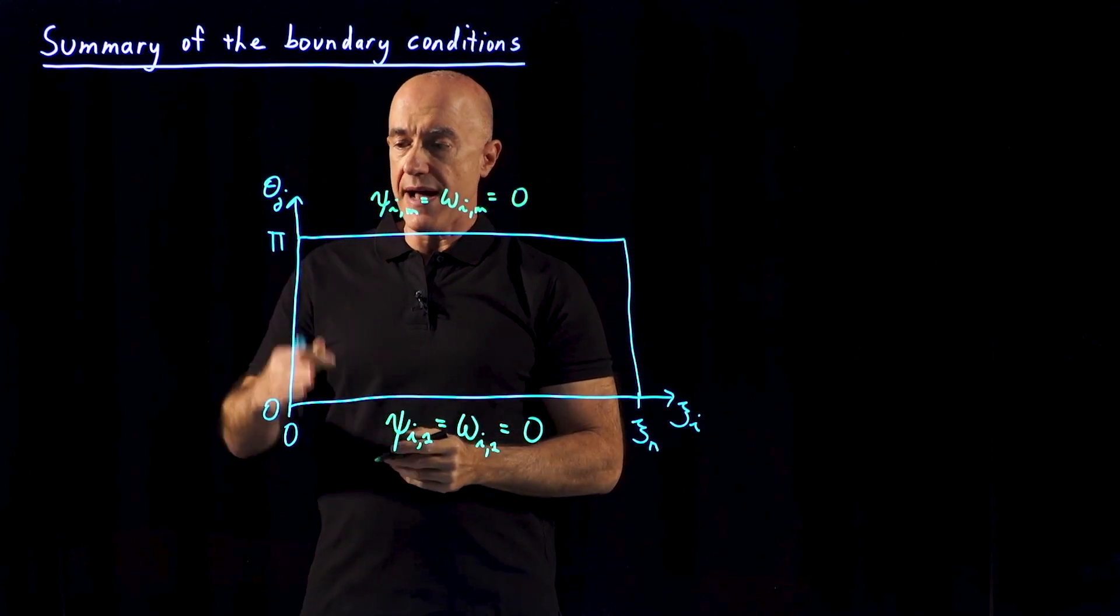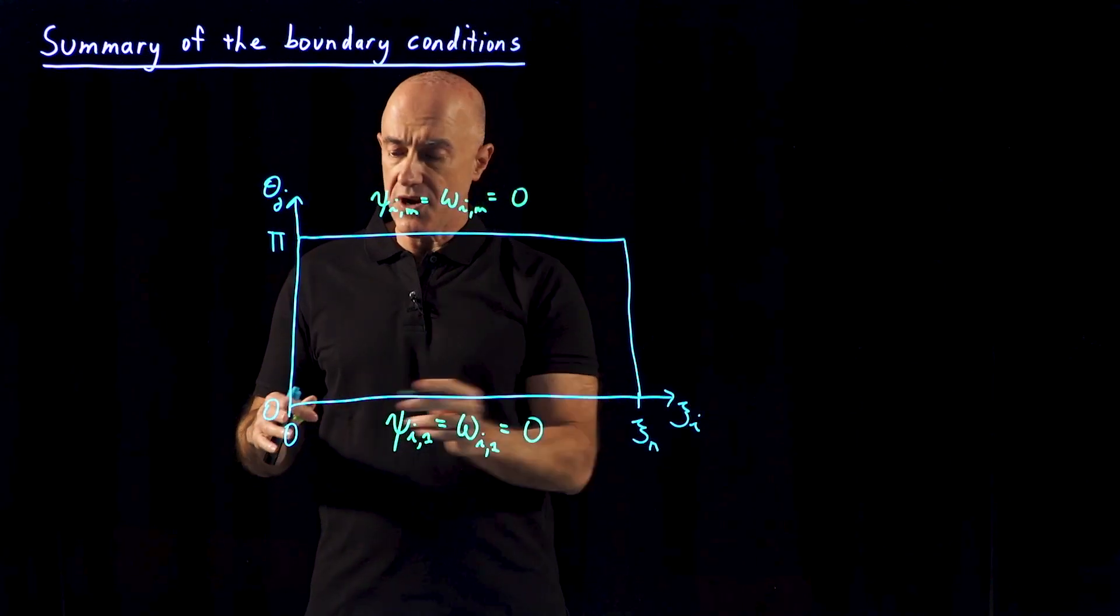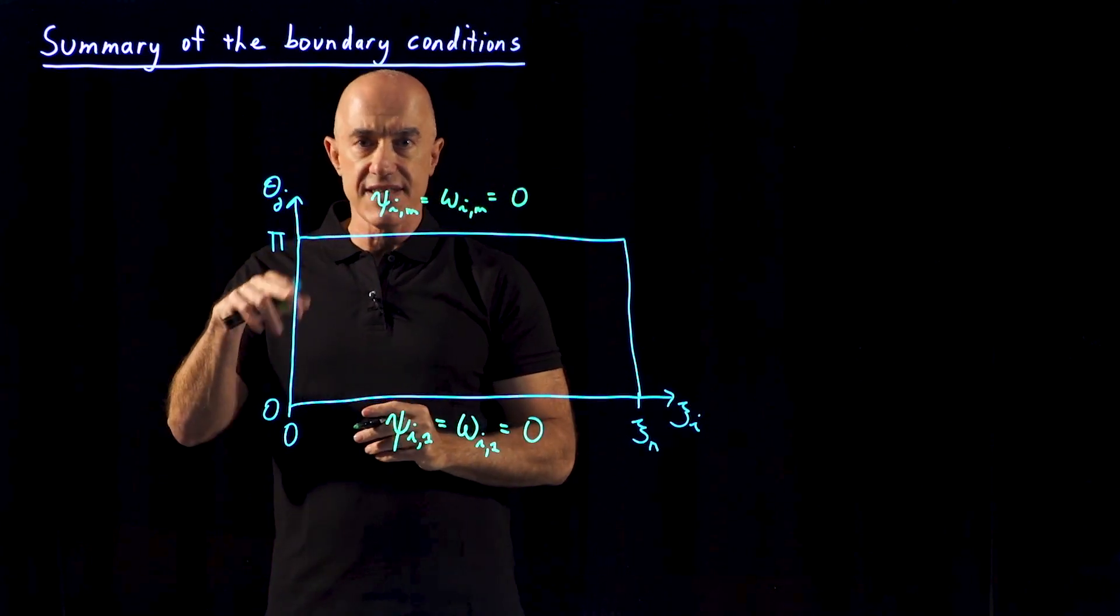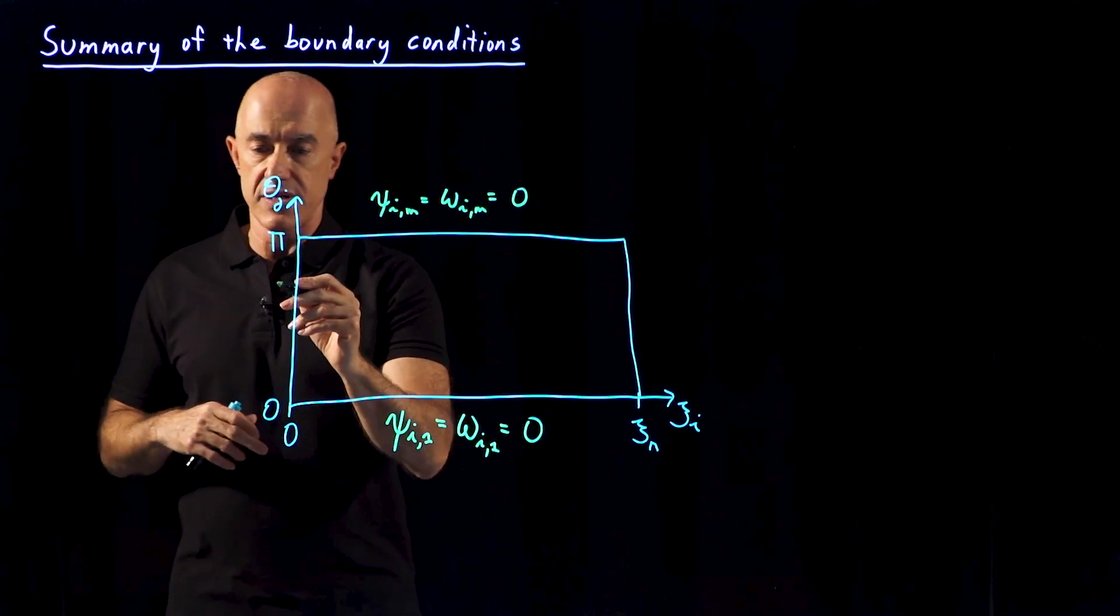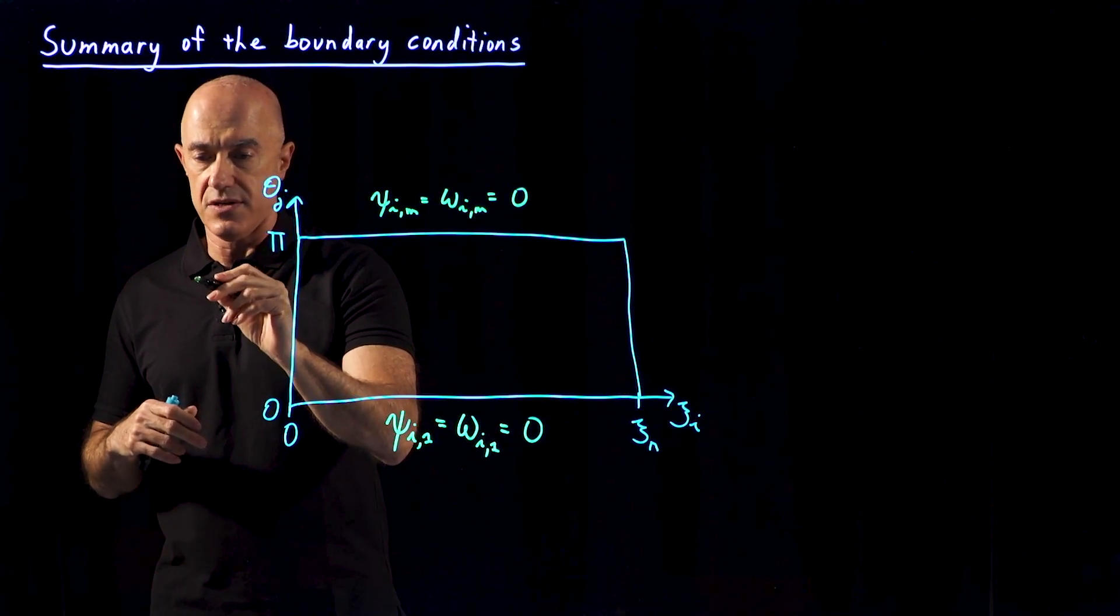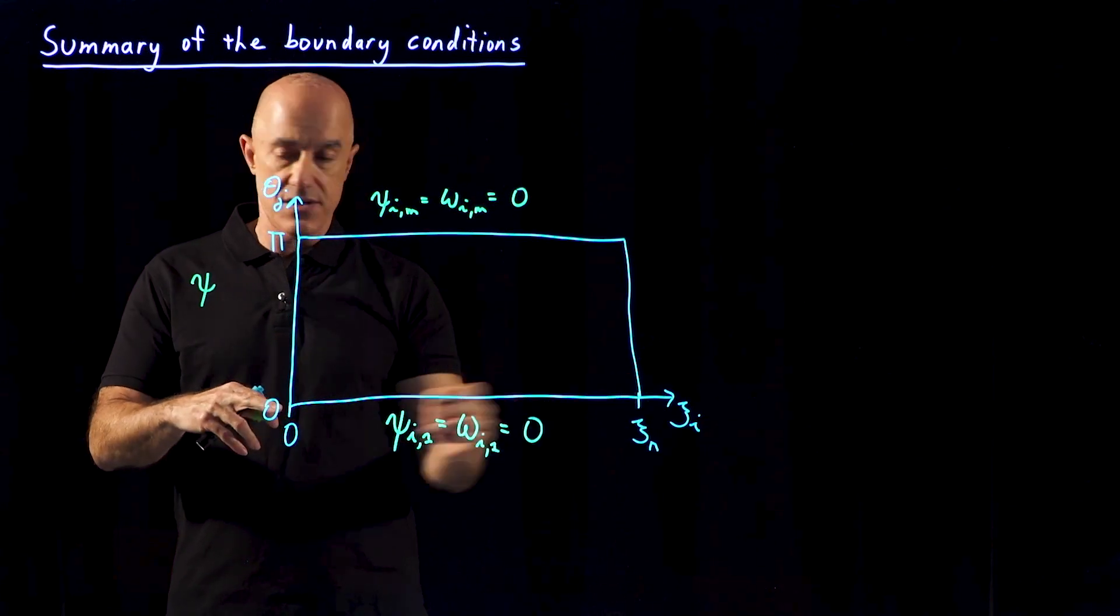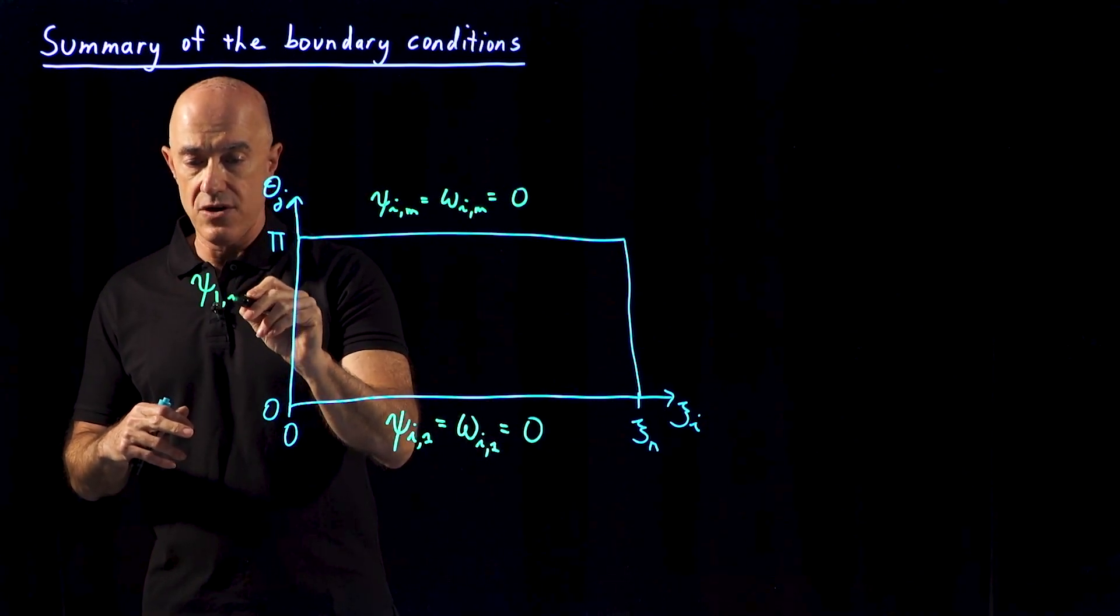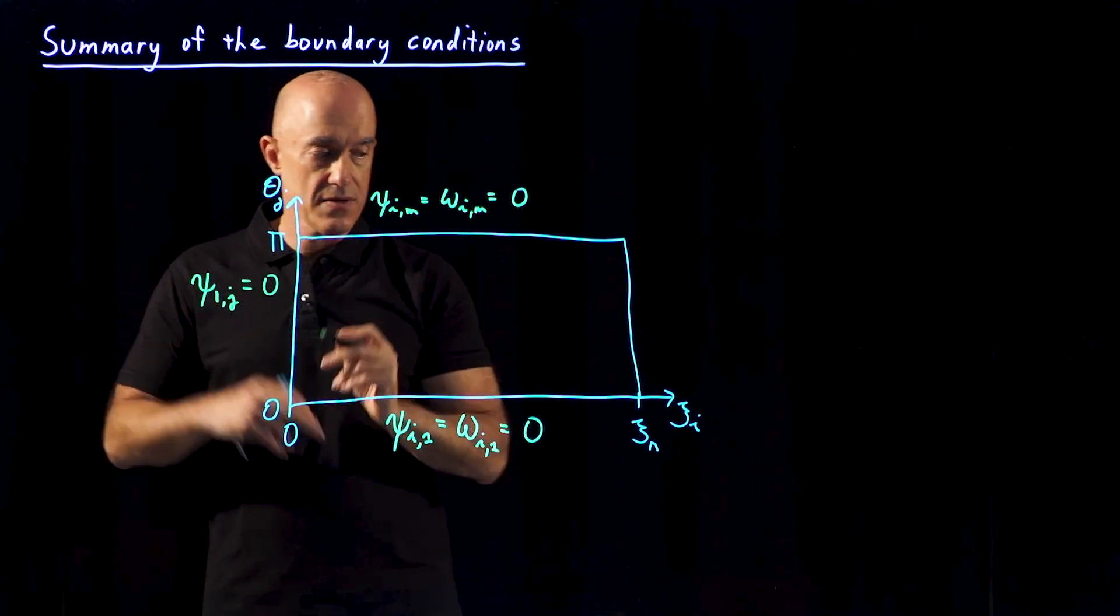Okay, what about this left side of the rectangle? This corresponds to the cylinder boundary condition. We know that the stream function is 0 on the cylinder. So that means the stream function on the cylinder, the first grid point for all angle j, has to be 0.